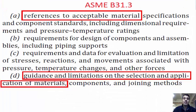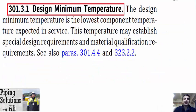We rely on the ASME B31.3 code to establish the engineering requirements for safe design of our project. The code includes references to acceptable material specifications and guidance and limitations on their selection and application. Therefore, it is the code's scope to specify the design minimum temperature for each material. Design minimum temperature is the lowest component temperature expected in service.